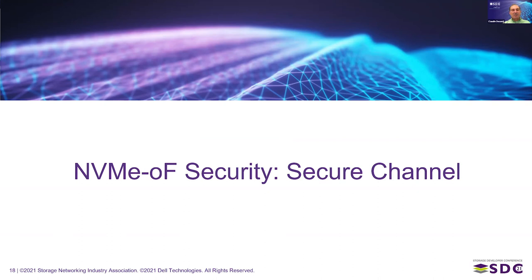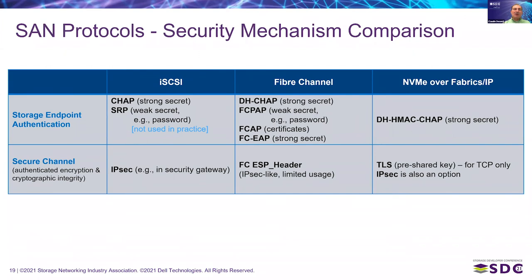Now let's go to the secure channel piece of NVMe over Fabrics security. Comparing secure channel mechanisms: iSCSI uses IPSec, typically in security gateways rather than end-to-end. Fibre Channel defined an ESP header that is IPSec-like but got very limited usage in practice. For NVMe over Fabrics, TLS is defined for TCP — something controlled by the NVMe protocol. IPSec can also be used but is completely transparent to NVMe since it is much lower in the stack.